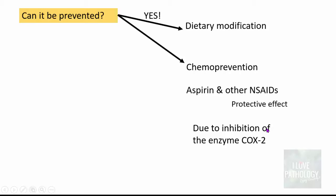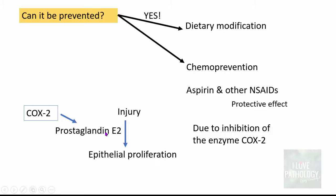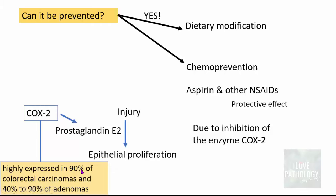How does chemoprevention work? That's because of inhibition of the enzyme COX-2. COX-2 is an enzyme responsible for the synthesis of prostaglandin E2, which is involved in epithelial proliferation whenever there is injury. COX-2 is highly expressed in 90% of colorectal carcinomas and around 40 to 90% of adenomas. So by taking aspirin and other NSAIDs, because of inhibition of COX-2, there is some amount of protection offered against the development of colorectal carcinomas.